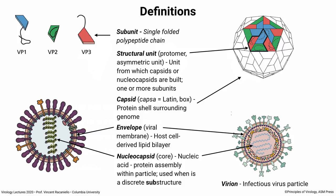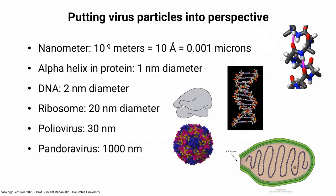Okay, those are the terms I'm going to use. Some size perspective: a nanometer is 10 to the minus 9 meters, which is 10 angstroms or 0.001 microns. We use this to talk about viruses because they're very small. An alpha helix in a protein is about a nanometer in diameter. DNA is about 2 nanometers in diameter. A ribosome is about 20 nanometers. Poliovirus is 30 nanometers — slightly larger than a ribosome. And one of the bigger viruses, Pandora virus, is 1,000 nanometers. Pithovirus is slightly bigger at 1,200 nanometers.